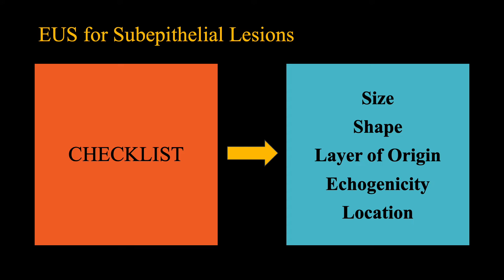When evaluating a subepithelial lesion by EUS, it is important to document five morphological features: namely size, shape, layer of origin, echogenicity, and its location. These features help to determine the underlying nature of the lesion and enable its risk stratification.